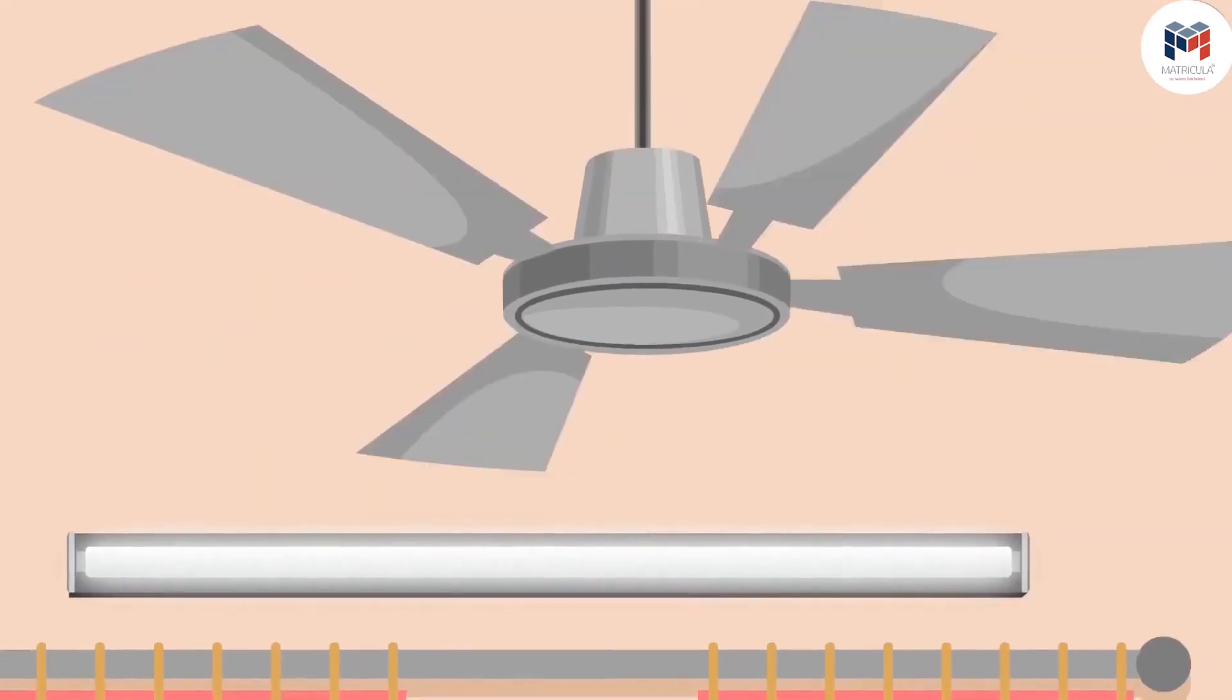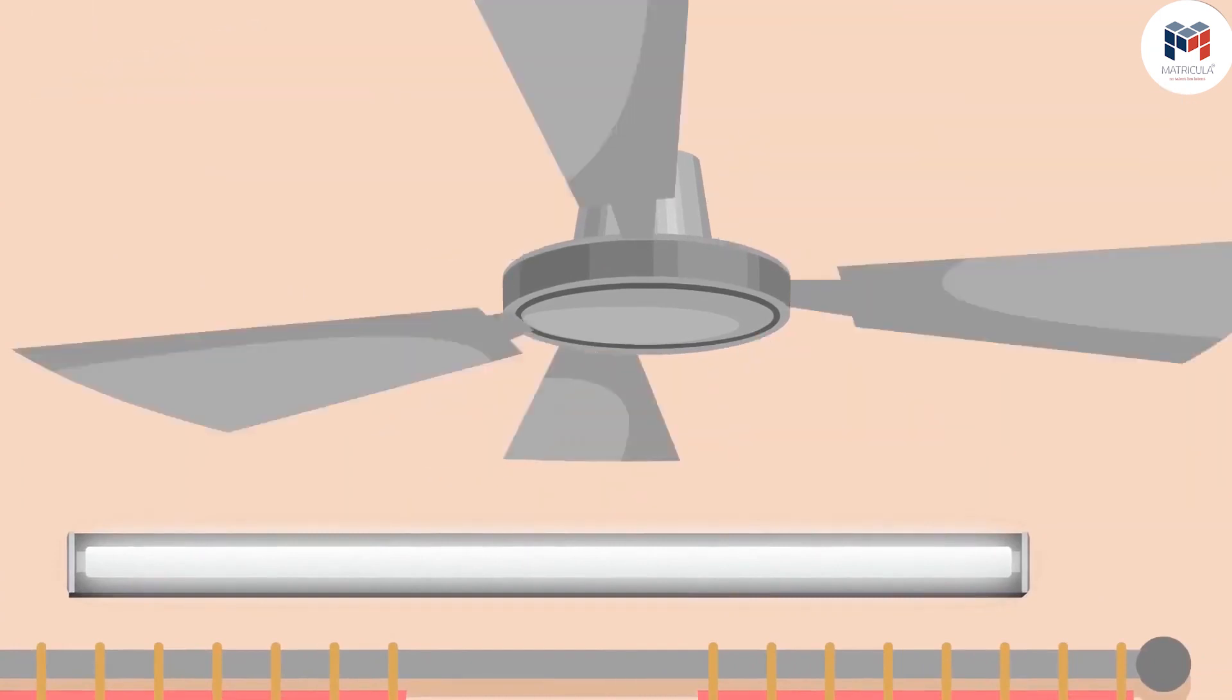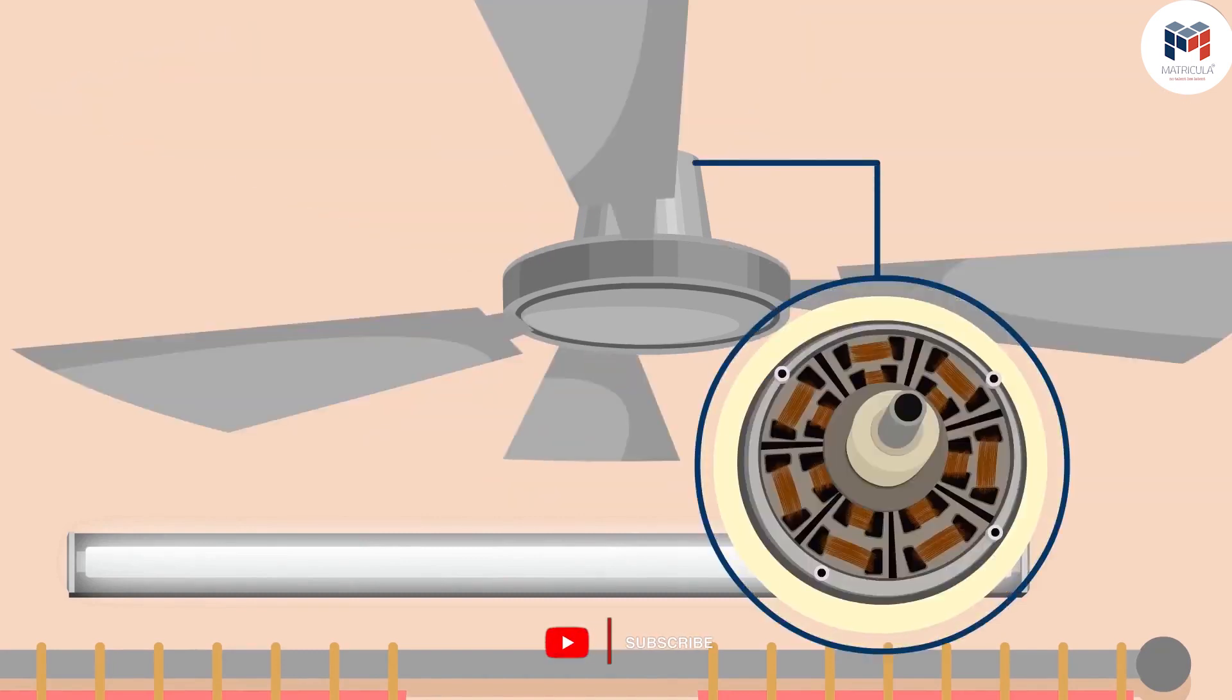But what happens when this electricity flows into a fan and it starts rotating? We have heard this most often that there is a motor inside the fan which helps it in rotating. Now the question arises what exactly is there inside this motor?